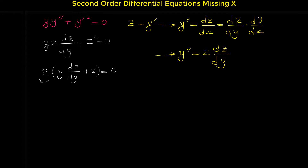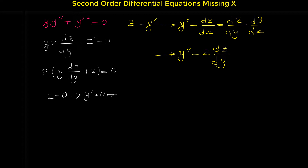Since the product equals zero, we set each factor to zero separately. First, let z equals zero. Since z is y prime, this means y prime equals zero, so y is a constant function. Let's call it c1. This is one solution for this differential equation.